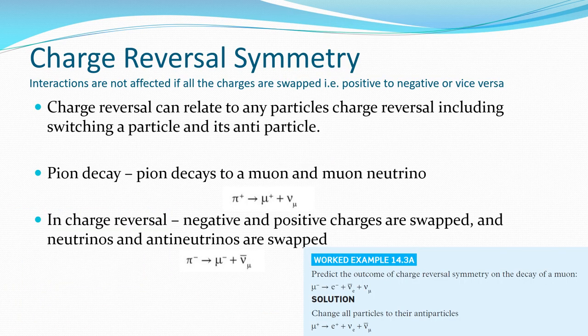Charge reversal symmetry. Interactions are not affected if all the charges are swapped, so positive, negative, vice versa. This is an example of reversing charges but keeping our symmetry. So our situation here, we have pion decay. Pion decays into a muon and a muon neutrino. So there's our pion, our muon, and our muon neutrino.